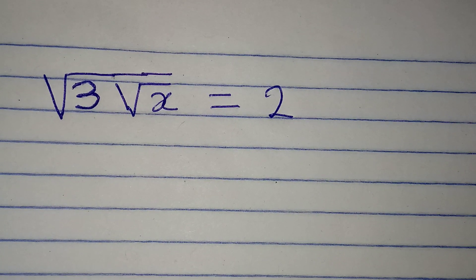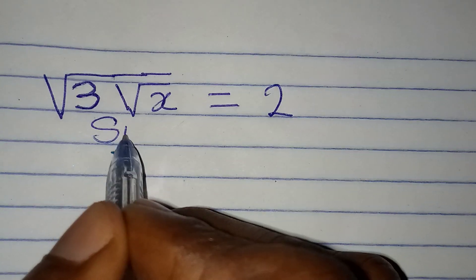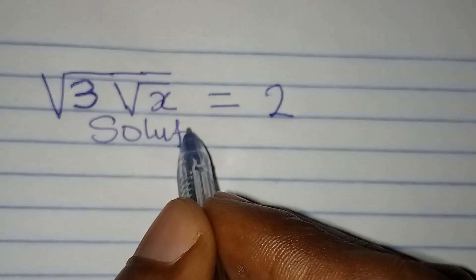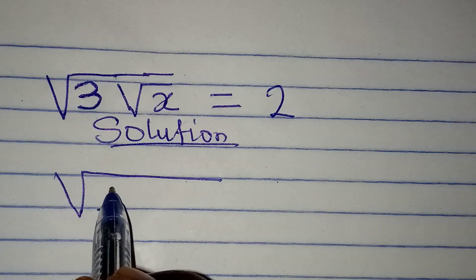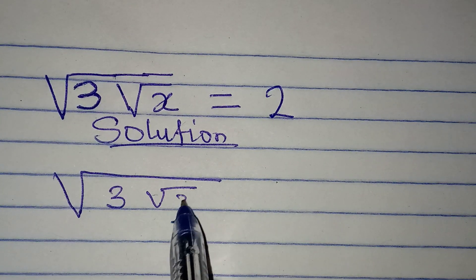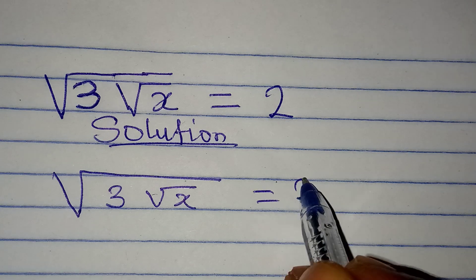Hello everyone, let's solve this problem very quickly. We have square root of 3 square root of x equal to 2.